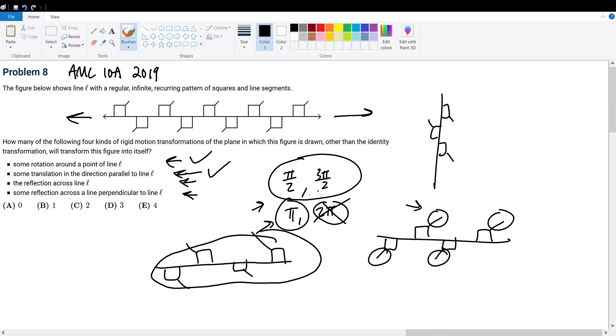We only want to change its transformation. Orientation cannot be changed—what can be changed is transformations. This obviously changes orientation because the diagonals are now on the opposite side from where they're supposed to be. So the third one is a big no.